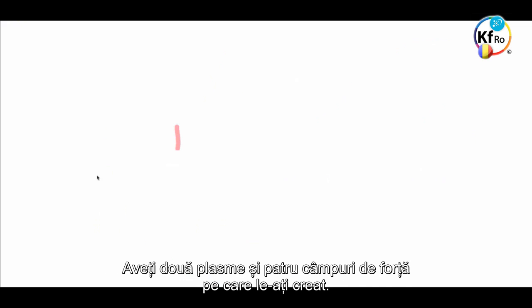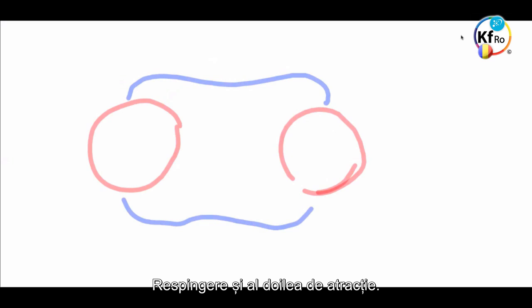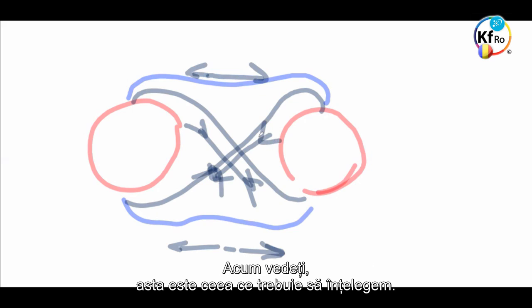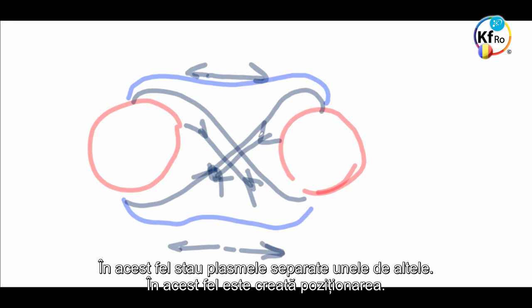You have two Plasmas, and you have the four Field forces, which you have created, the repulsion. And, the two of the attraction. These two, create the separation. And, these two, create the attraction. Now, you see, this is what we need to understand. That's how Plasmas stay separate from each other. That's how the positioning is created.